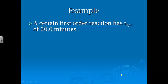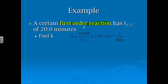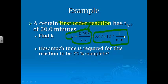For example: a certain first-order reaction has a half-life of 20.0 minutes — find k. As soon as I know it's first order, I use the half-life equation, and k equals 3.47 × 10⁻² min⁻¹. Since it's first order, our unit is going to be 1 over time. That consistency in units carries over to show the units for second order and zero order as well.